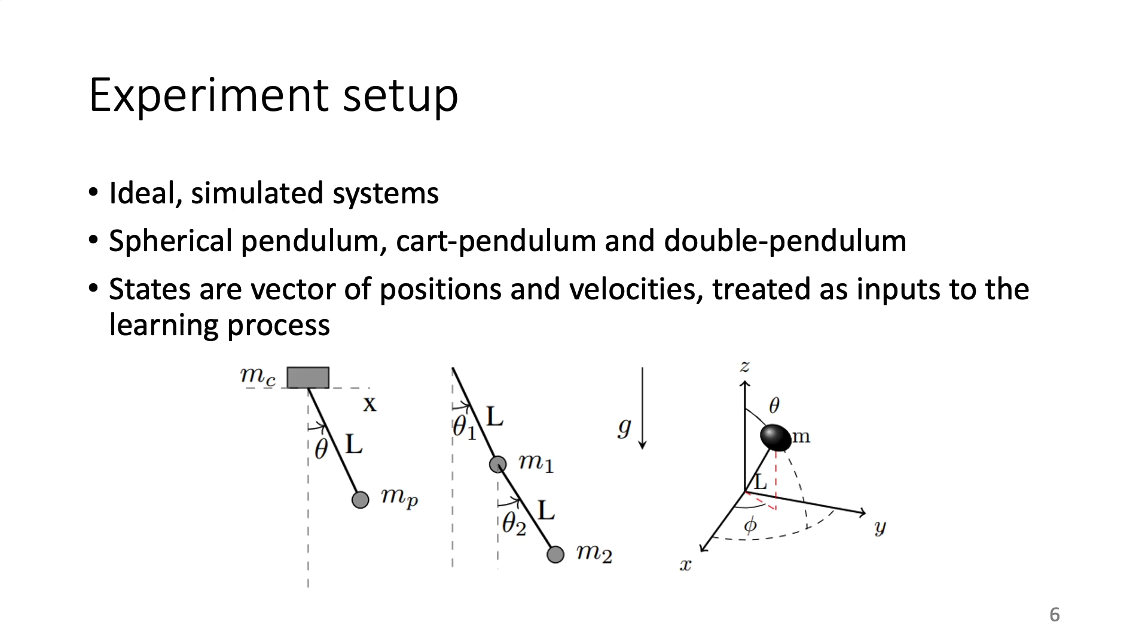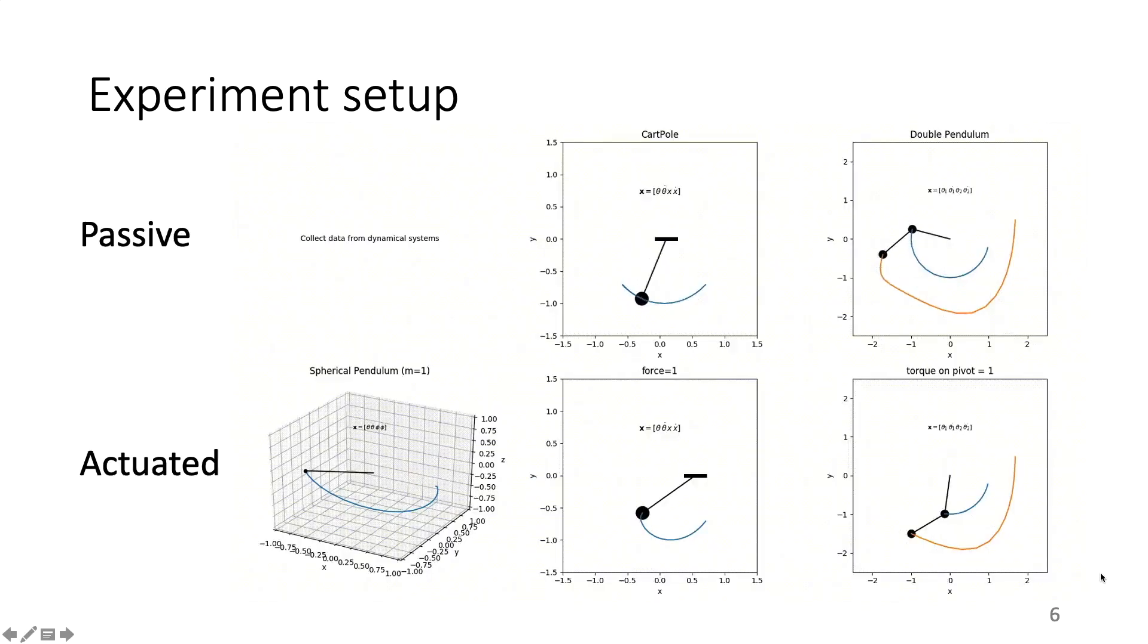In all systems, data are sampled at 100 Hz, and the gravity is the only external force. We test actuated and passive schemes on each system. In the actuated scheme, data are collected for a period of 1 second, while in the passive scheme, data are collected for 3 seconds. In the actuated scheme, we compute the rate of change of the total energy, while we don't have that information in the passive scheme.